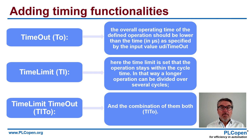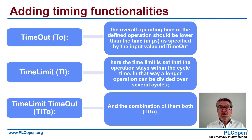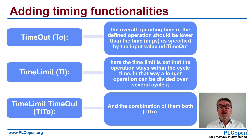On top of that, we can add timing functionalities, and there are two different ones. The first is the timeout, where we limit the maximum amount of time that can be used for the execution. The other is a time limit, where we limit the amount of time per cycle used for the execution — so if you have a larger task that uses more than one cycle, you slice it up and do a certain part within each cycle. And of course we have the combination of both: time limit and timeout.